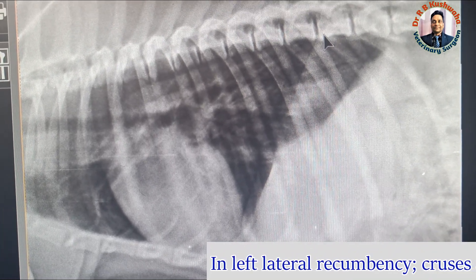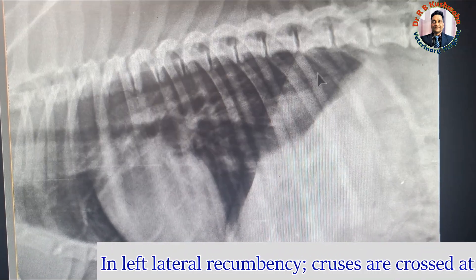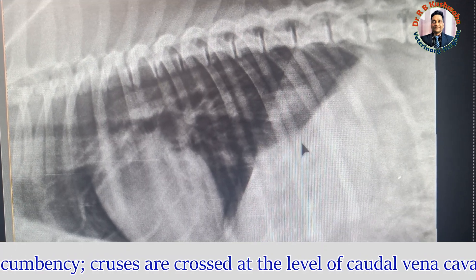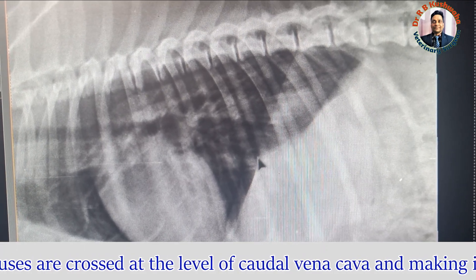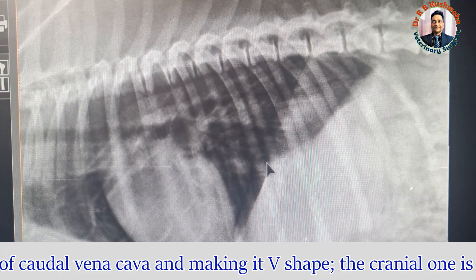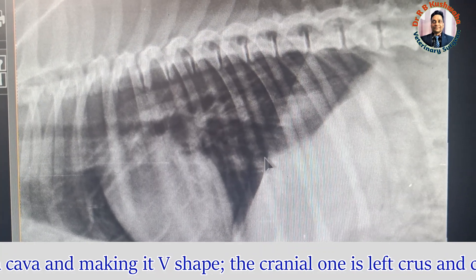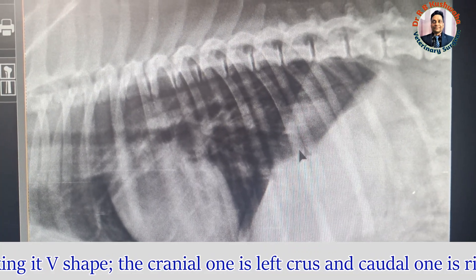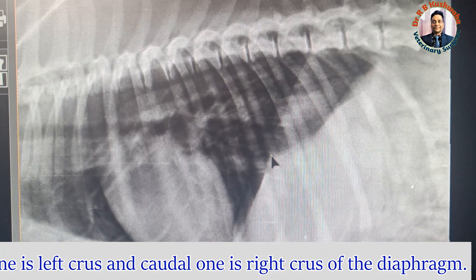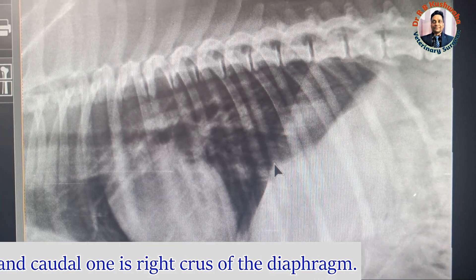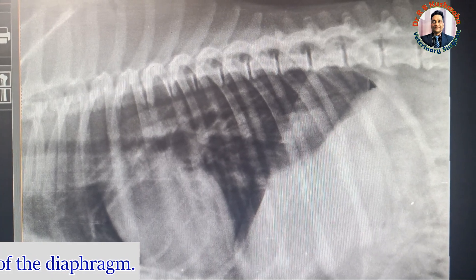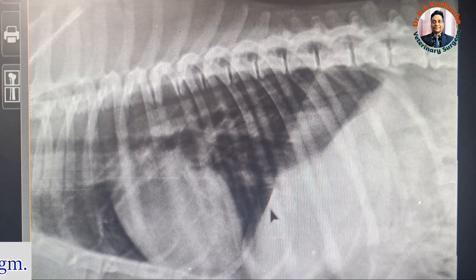This is the lateral radiograph of a dog. You can see here — this is one crus of the diaphragm and this is the other crus of the diaphragm. If the crura of the diaphragm cross at the level of the caudal vena cava, making a V-shape, that means this particular radiograph was taken in left lateral recumbency. In left lateral recumbency, the cranial one is the left crus of the diaphragm and the other is the right crus.